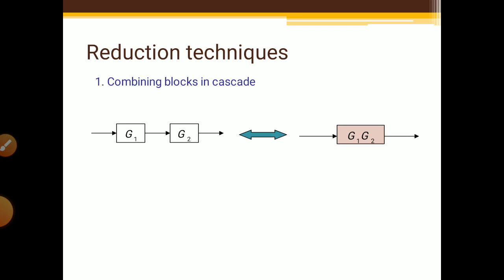The first rule is combining blocks in cascade. Cascade means series. When two blocks G1 and G2 are in series, their output is multiplication — G1 into G2. We get only one block having the value G1 into G2. So you have to multiply the blocks when they are in series.